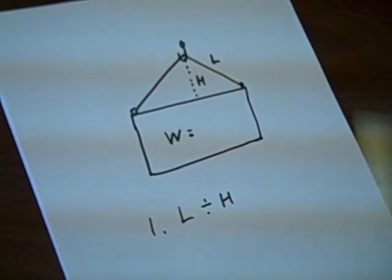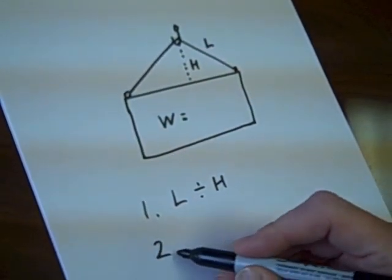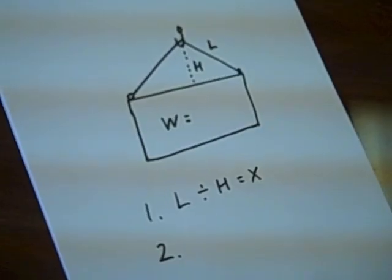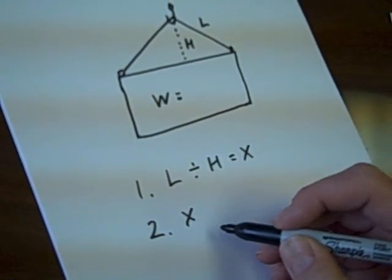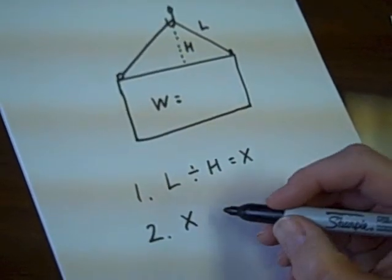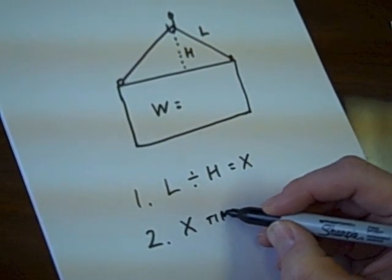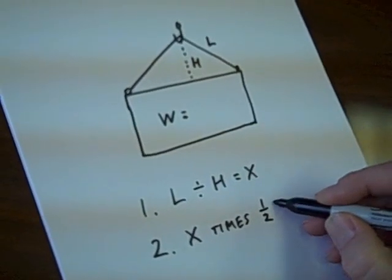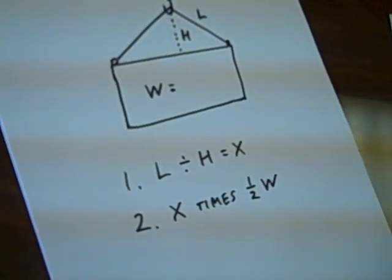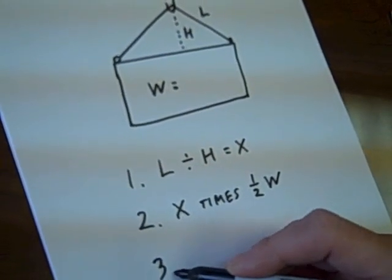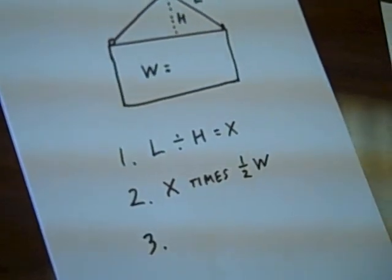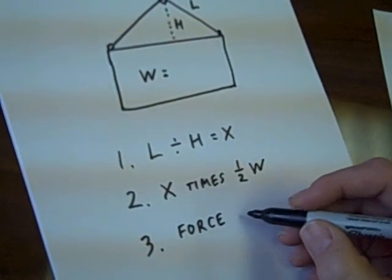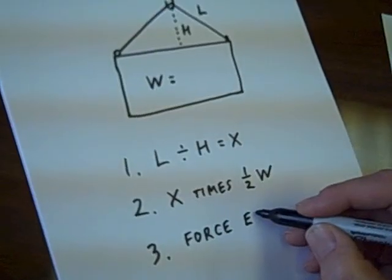Then the second thing we do is take that answer, and just for practical purposes we will call that X, and we will take that answer and multiply it times half of the weight. The answer to that is how much force is exerted on each of these sling legs.